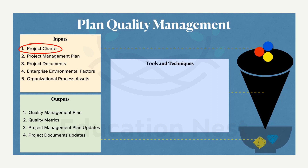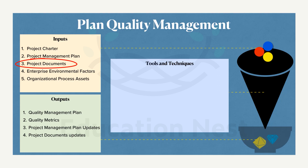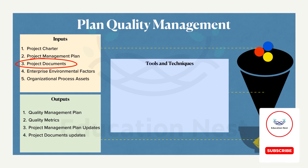Looking at the inputs, we need the project charter to know the success criteria. The project management plan is also an input, but you don't need to use the complete plan — you can use components like the risk management plan, the stakeholder management plan, and the requirement management plan as a basis for Plan Quality Management.